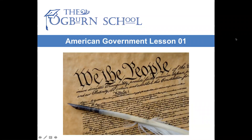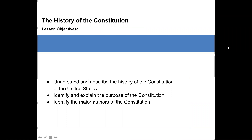American Government Lesson 1: The History of the Constitution. Our lesson objectives are to understand and describe the history of the Constitution of the United States, identify and explain the purpose of the Constitution, and identify the major authors of the Constitution.